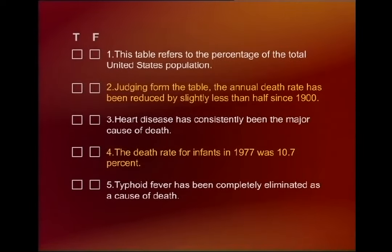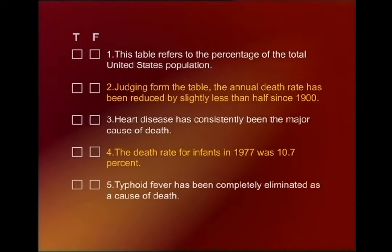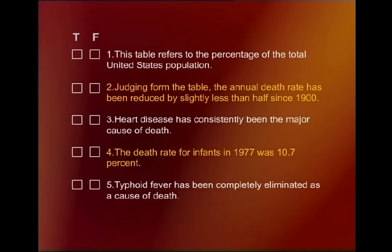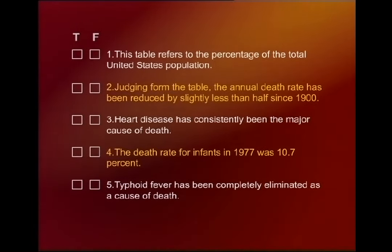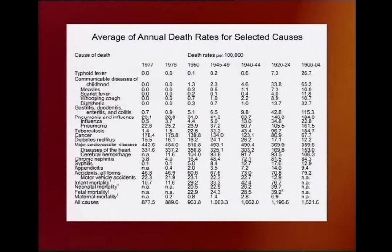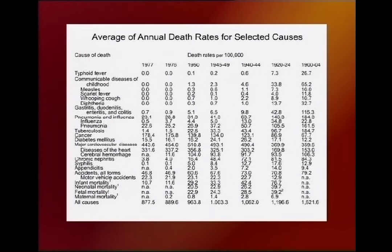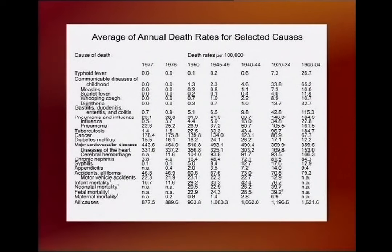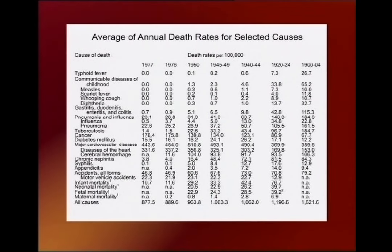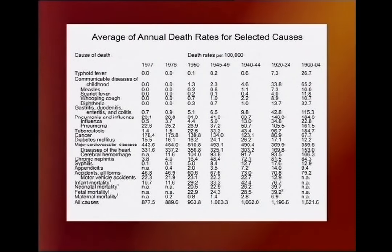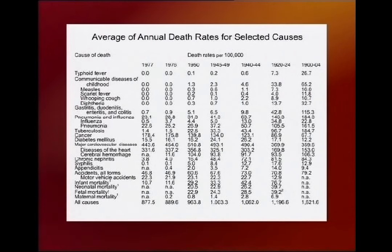Number four: 'The death rate for infants in 1977 was 10.7%.' Simply refer to infant mortality in the table — mortality means death. The death rate for infants in 1977 was 10.7. The statement is true. Number five: 'Typhoid fever has been completely eliminated as a cause of death.'